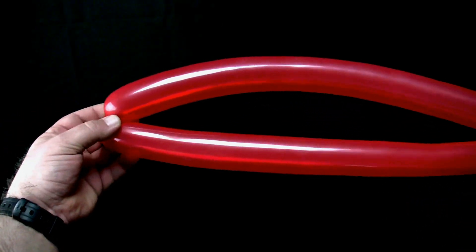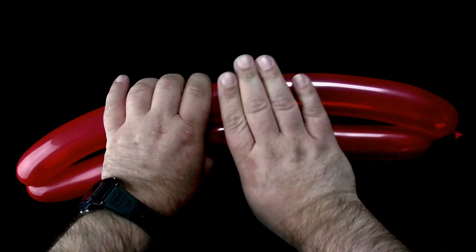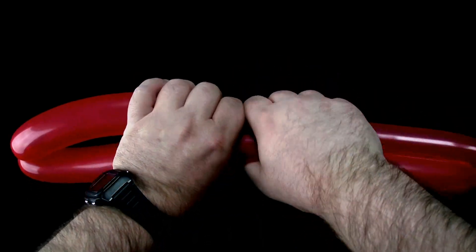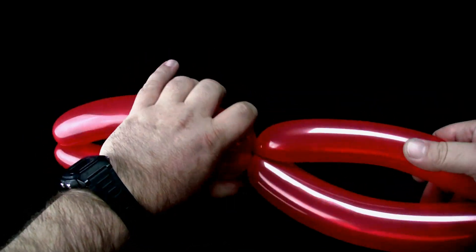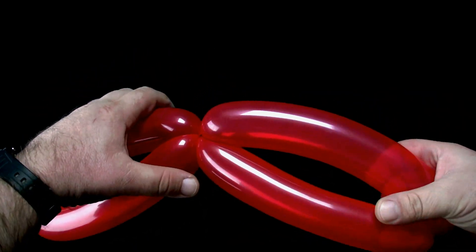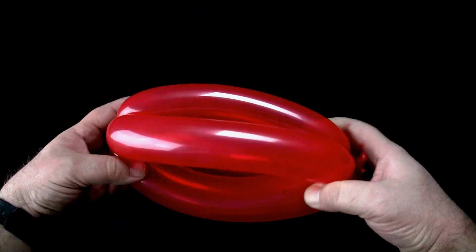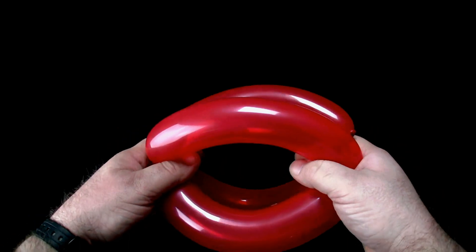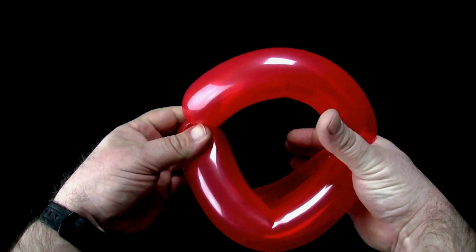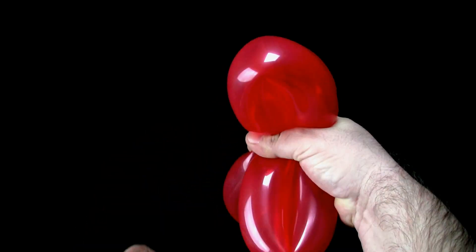Now twist the balloon in half forming four bubbles of equal size. Fold the balloon in half. Push the twists at both ends towards the center until they meet in the middle causing all four bubbles to form loops. Secure all the twists together in one hand.